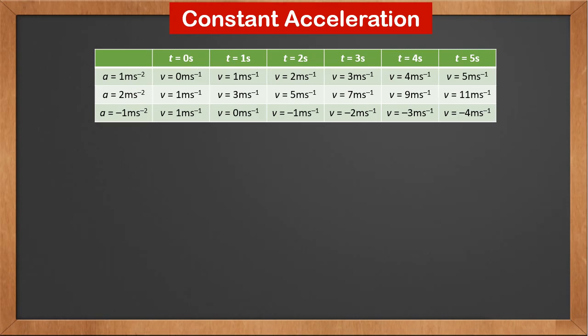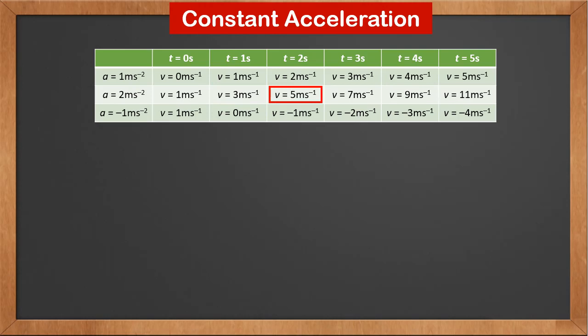If you look at the second row of the table, the acceleration is 2 meters per second squared. If at time 0 the velocity is 1 meter per second, then at time 1 second the velocity becomes 1 plus 2, which is 3 meters per second. At time 2 seconds it becomes 5 meters per second, and at time 3 seconds the velocity becomes 5 plus 2, which is 7 meters per second. The velocity keeps increasing by 2 meters per second every second.